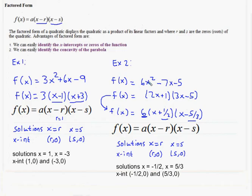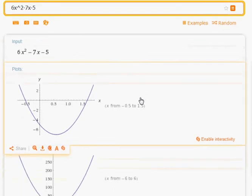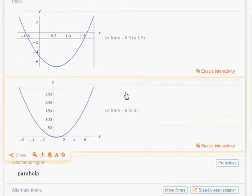My second example, the 6x squared minus 7x minus 5, you saw that my answers came out to be fractional. So when I went to Wolfram Alpha, I just typed the problem in, pressed enter. And although it's difficult to tell, negative 1 half is one of the x intercepts. The other one more difficult to tell is the 5 thirds, which is about 1.6 repeating, which is about right there.